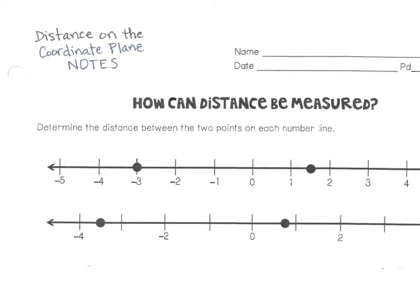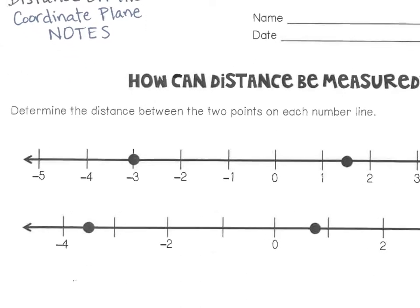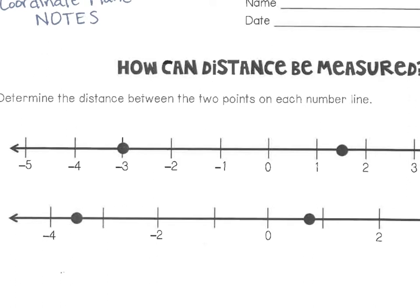Starting at the top, it says determine the distance between the two points on each number line. Looking at the top number line, I'm going to call this point A and this one point B. If we want to find the distance between these two points, you could start at A and count how many units it takes to get from point A to point B. So here would be one, two, three, four, and then this is a half — so we could say it is four and a half units.